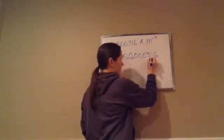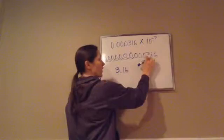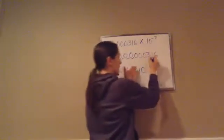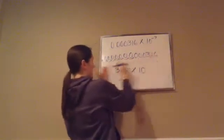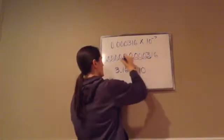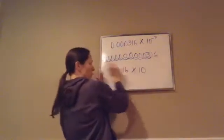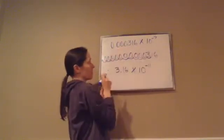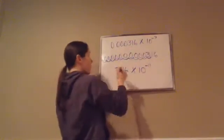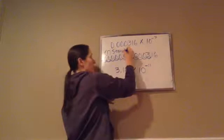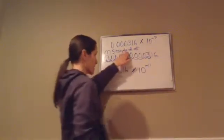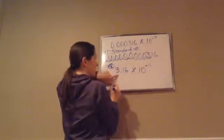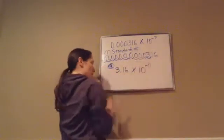Now I take this standard number and put the decimal where it really belongs, after the first non-zero: 3.16 times 10. Then I count how many places from the new decimal position back to where it started, going to the left: 1, 2, 3, 4, 5, 6, 7, 8, 9, 10, 11. Because we're going to the left, it's negative 11. So the correct scientific notation is 3.16 × 10⁻¹¹. Always convert to standard number first, then write proper scientific notation.